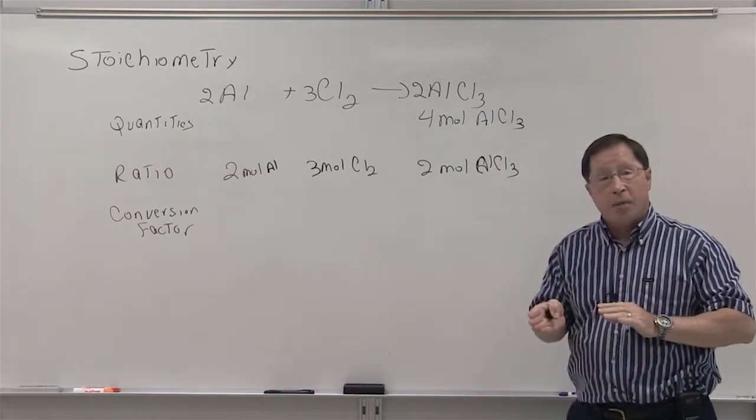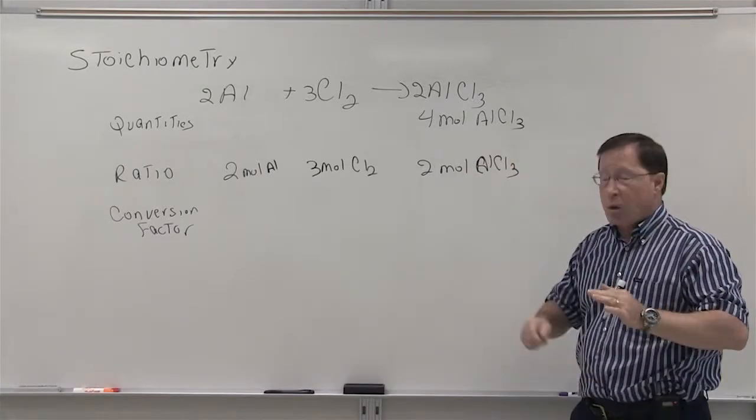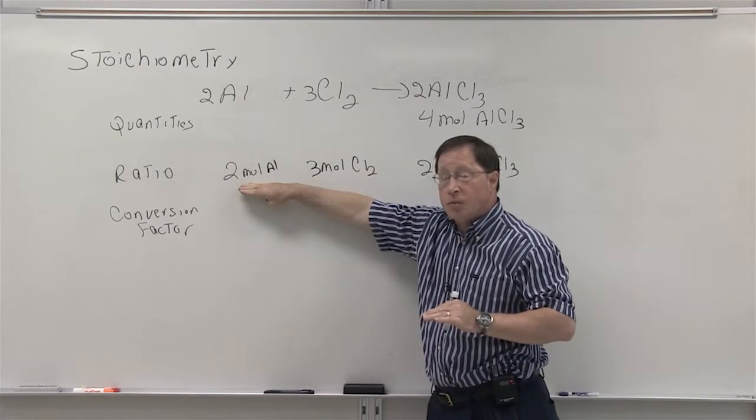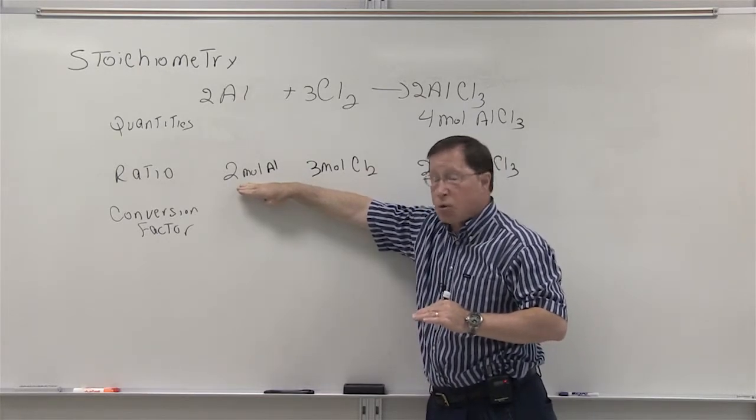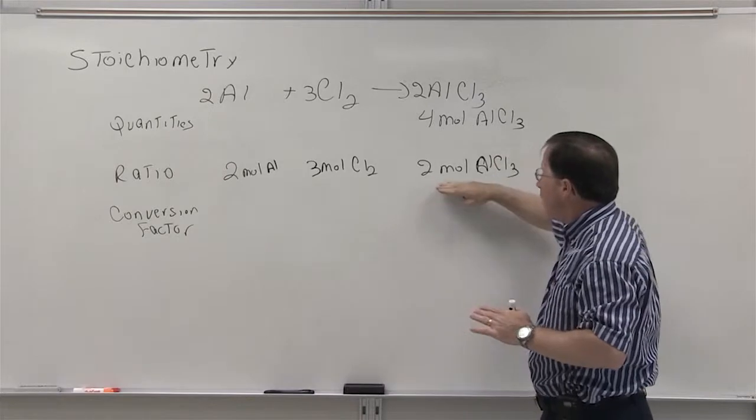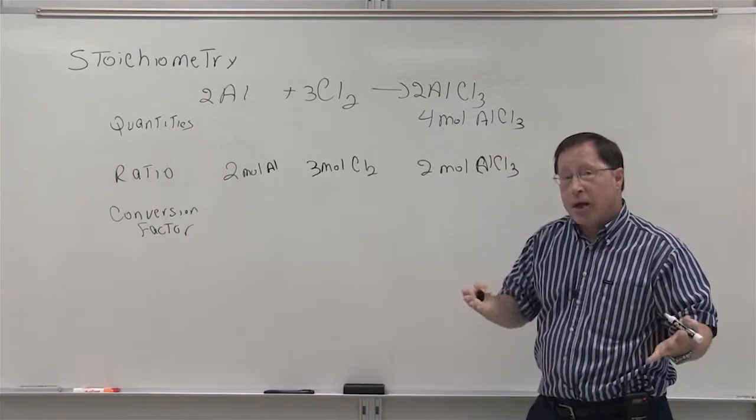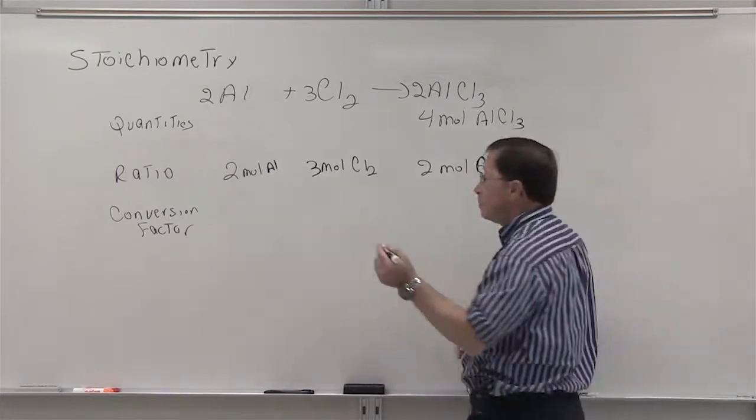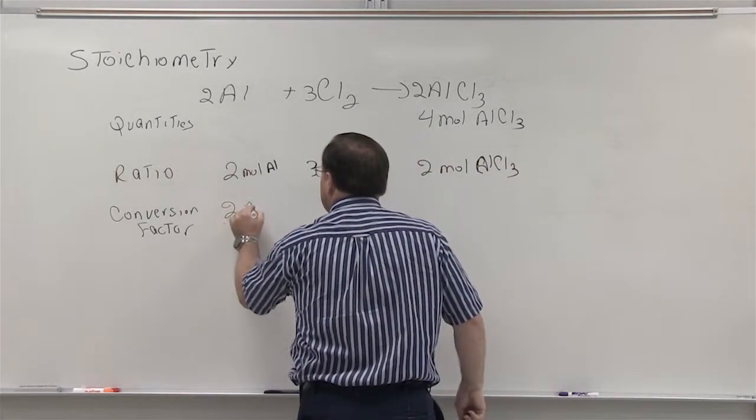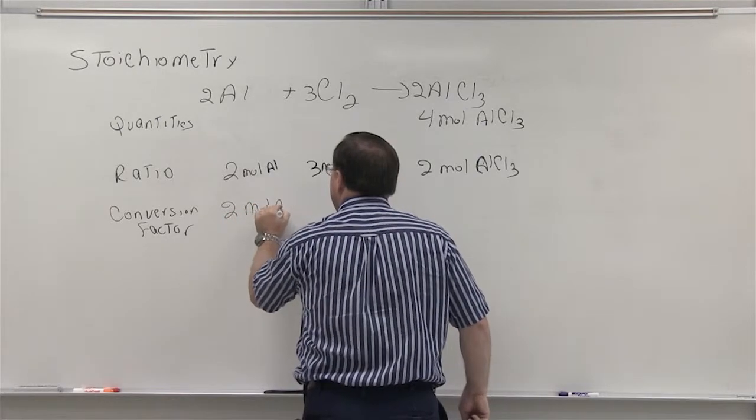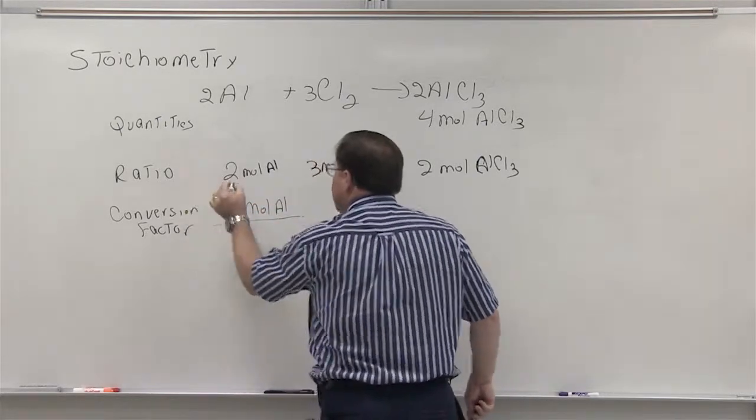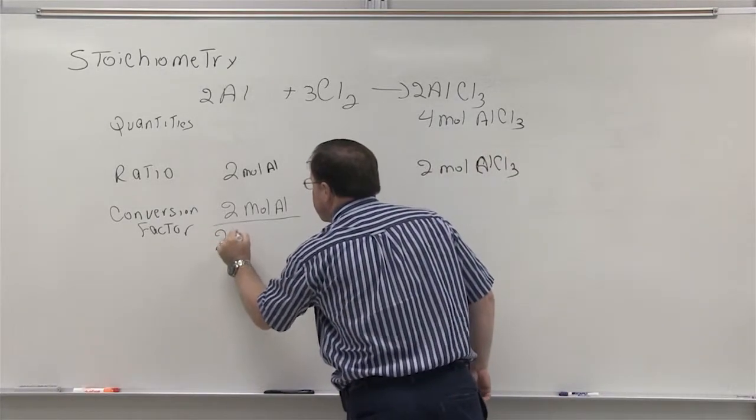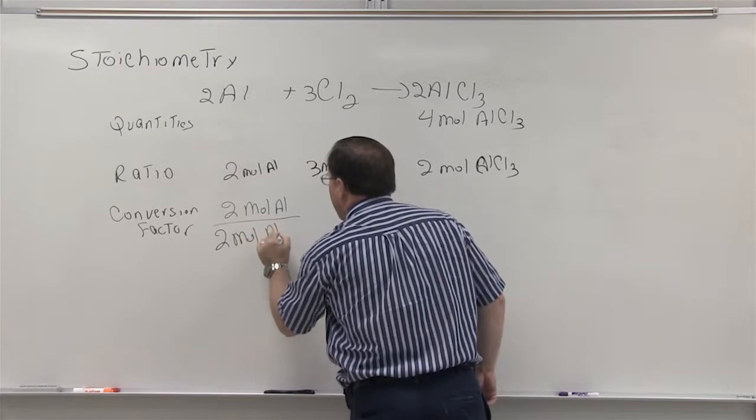To do that, we need to know how much aluminum and how much chlorine we need to order. The first thing we have to do is decide on a ratio. In the balanced equation, we have two moles of aluminum and two moles of aluminum chloride. All you have to do to get the ratio of aluminum to aluminum chloride is to write this ratio of aluminum over the ratio of aluminum chloride.